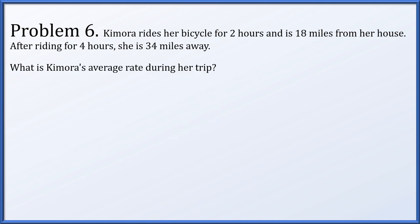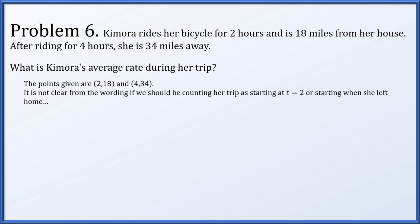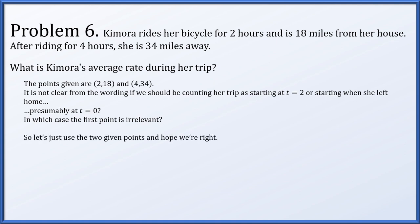In problem 6, Kimora rides her bicycle for 2 hours and is 18 miles from her house, then after 4 hours she is 34 miles away. The two points are (2, 18) and (4, 34). The wording is slightly ambiguous about whether we use the full trip or just these two hours, but using these two given points, delta y over delta x is simply 8 miles per hour. This was verified as correct by the homework portal, though the wording is not especially clear.